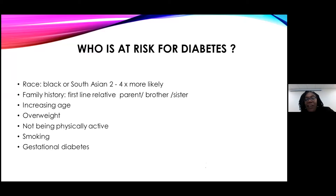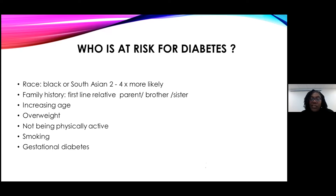Who is at risk of developing type 2 diabetes? Type 1 mostly occurs in the younger population, but for type 2, risk increases as we age. If you're Black or South Asian, you are two to four times more likely to develop diabetes. A family history with a first-line relative - a parent, brother, or sister - who has diabetes makes you more likely to get it. Being overweight and not being physically active also increase the possibility of becoming type 2 diabetic.